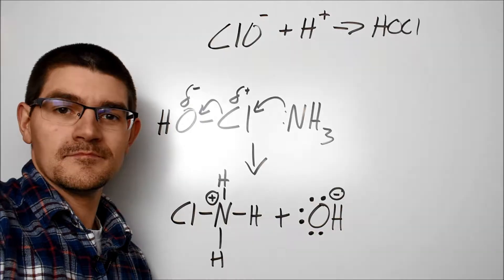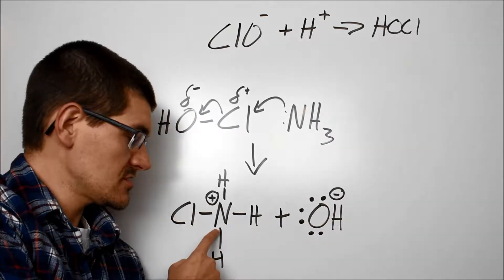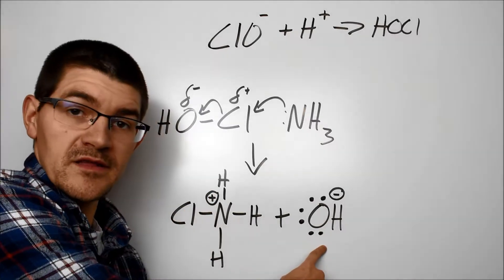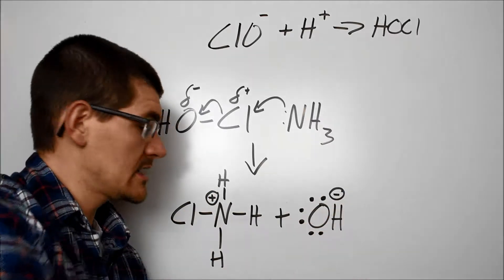Let's clean that up. Now we can see that we've covalently bonded our chlorine to the nitrogen, but we've created a quaternary center and a resulting positive charge. In addition, we have the OH polyatomic anion that has a negative charge.